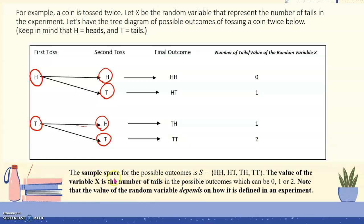So the sample space of the possible outcomes is heads-heads, heads-tails, tails-heads, and tails-tails. The value of the random variable X is the number of tails in the possible outcomes, which can be 0, 1, or 2. Take note that the value of the random variable depends on how it is defined in the experiment.